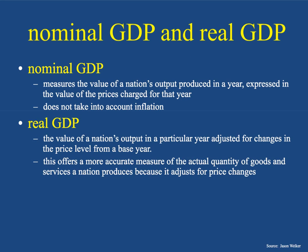Nominal GDP measures the value of a nation's output produced in a year, expressed in the value of the prices charged for that year. In other words, it does not take into account inflation. Nominal GDP is really easy math — you add up all of the things that were made in that year and you get a certain dollar value. And that's the end.